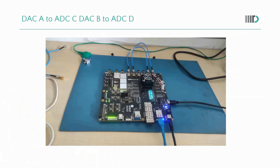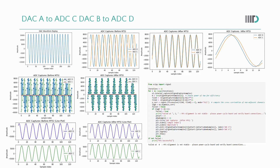In this configuration, we connect DAC-A to ADC-C and DAC-B to ADC-D using wires of the same length. This gives us DACs on different tiles but ADCs on the same tile. Before MTS the plots were not aligned, but after MTS they are only somewhat aligned — not completely. The verification confirms that MTS got failed in this case.